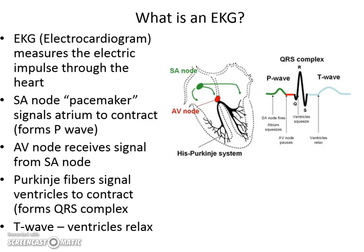EKG or ECG, it's the same thing — it measures the electrical impulses that travel through the heart. It starts with the SA node, which is considered the natural heart pacemaker. This is what sets the pace, the tone, and the rhythm of the heart. Notice here in green that the SA node will send down an electrical current to both atria at the same time, so that they can contract or squeeze at the same time.